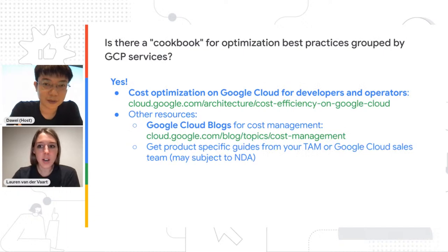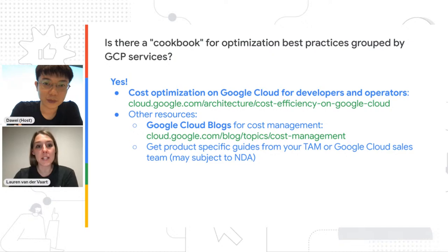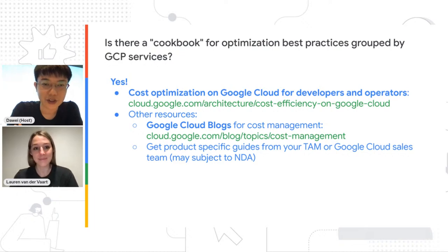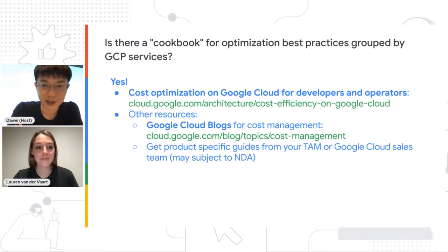One more pre-submitted question: is there a cookbook for optimization best practices grouped by GCP services? Yes — the 'Cost Optimization on Google Cloud for Developers and Operators' link shared earlier covers this. There are also resources on Google Cloud Blogs, and you can get product-specific guides from the Google Cloud sales team.